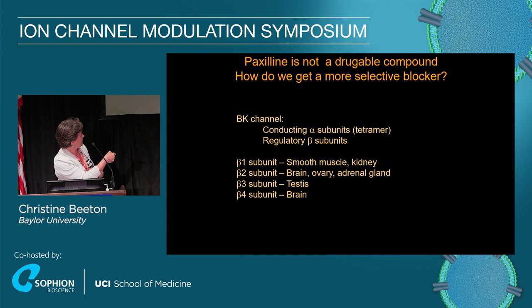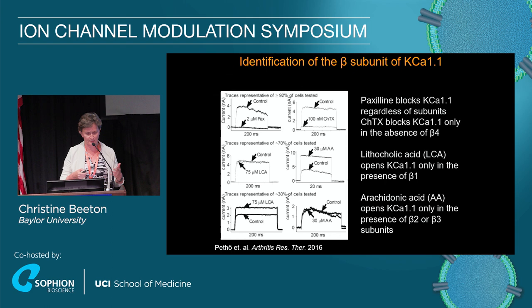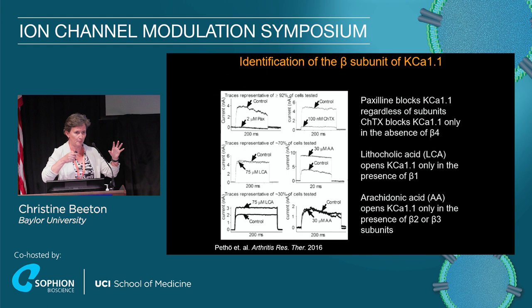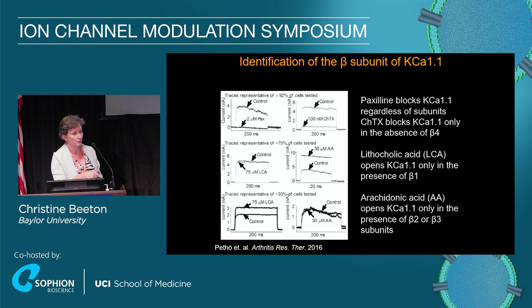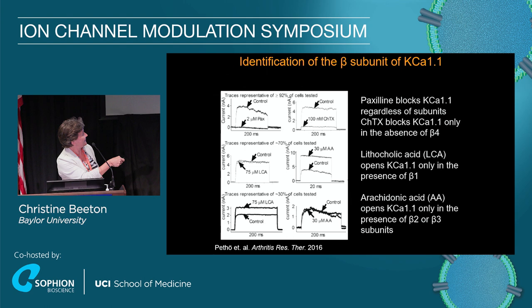Peptide blockers of the channel will block it in the absence or presence of some subunits. The four beta subunits — beta-1, 2, 3, and 4 — are expressed in different tissues. Let me show you the electrophysiology because this is an ion channel meeting. When we wanted to identify the beta subunits, it's like a puzzle with moving parts — there's not a single assay that will give you the answer. In whole cell patch clamp, paxilin gives complete block of the channel — we already knew that. Charybdotoxin only blocks the channel in the absence of the beta-4 subunit, and it works quite well, so we were able to rule out beta-4.